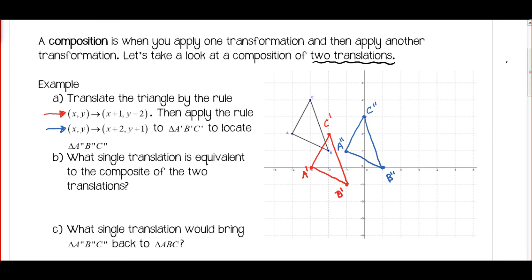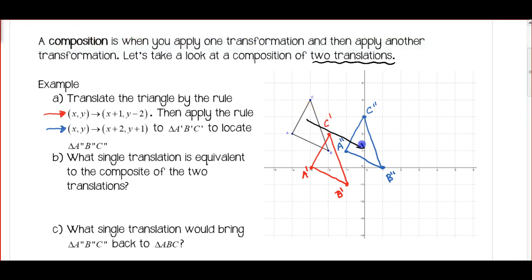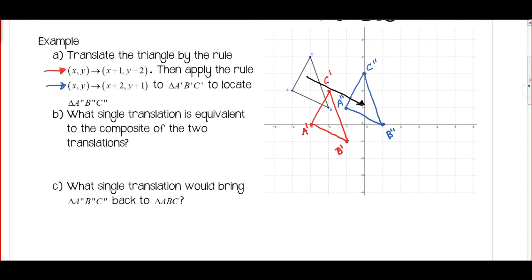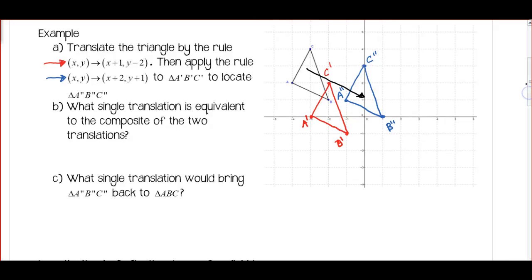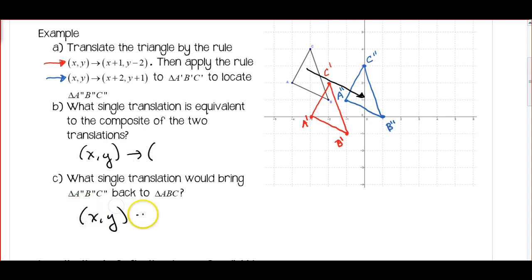Looking at this picture, we could have gone directly from the first triangle to the third triangle. So for the first question: what single translation is equivalent to the composite of the two translations? Go ahead and pause the video while you think about that. And then part C: what single translation would bring triangle A double prime B double prime C double prime back to the original triangle? For both of these, we want the rule X comma Y translates to blank, and you're going to fill it in.